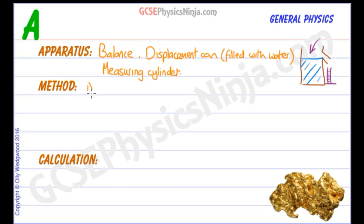The method we would use is in three parts. Let's first of all measure the mass of the nugget using the balance. So we would weigh the nugget and find out the mass in grams.